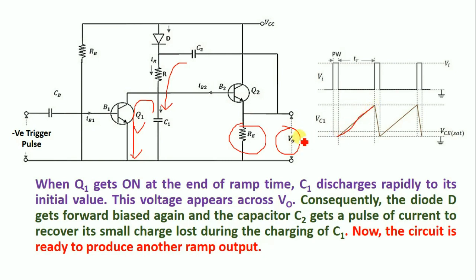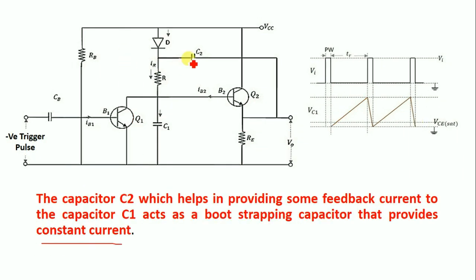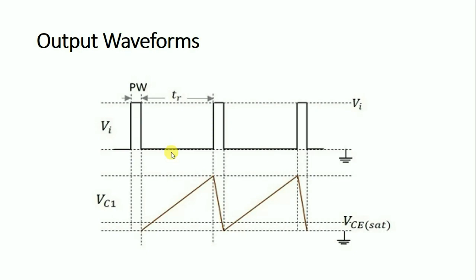The voltage across C1 appears across resistance RE, which is the output voltage V0. When transistor Q1 is turned ON, C1 discharges very rapidly, generating a ramp signal at the output. Capacitor C2 provides feedback current to capacitor C1, so C1 acts as the bootstrapping capacitor providing constant current. This is the output waveform of the bootstrap circuit — C1 charges and discharges rapidly, appearing across resistance RE as output voltage V0.